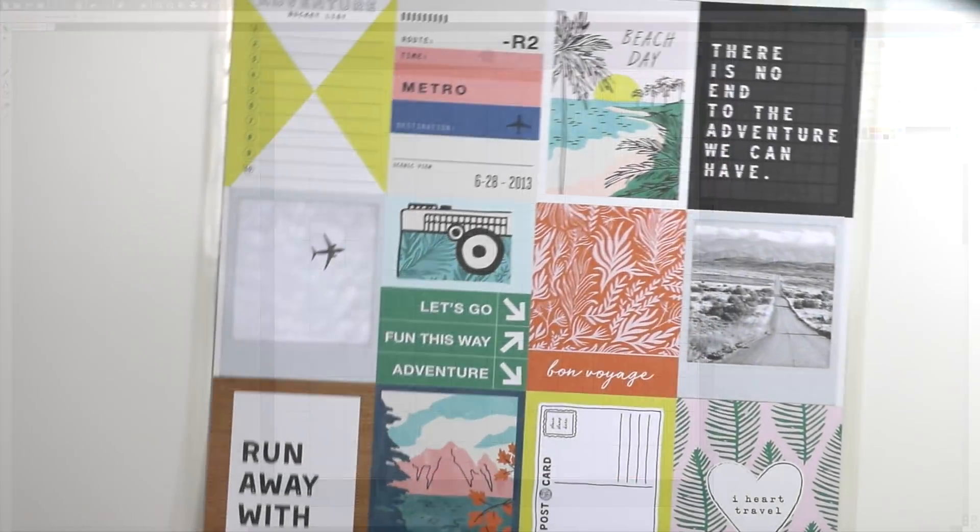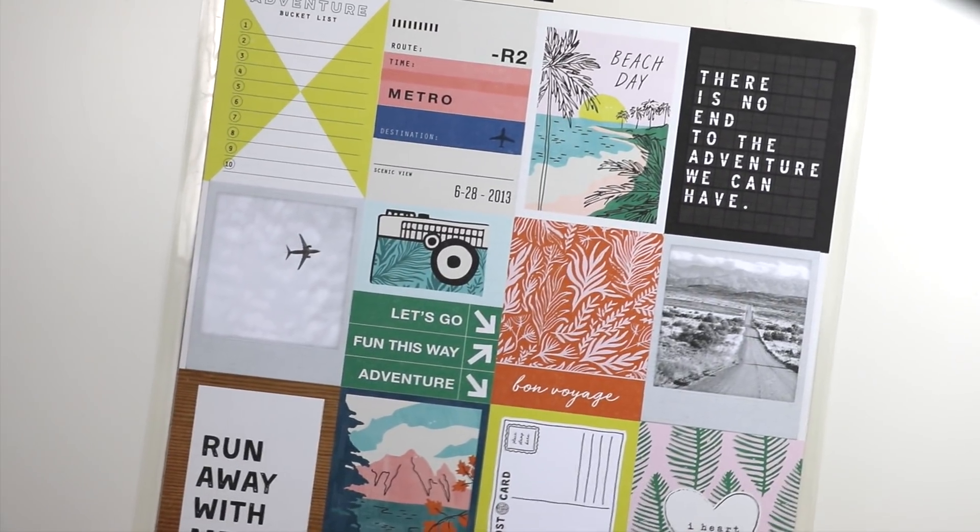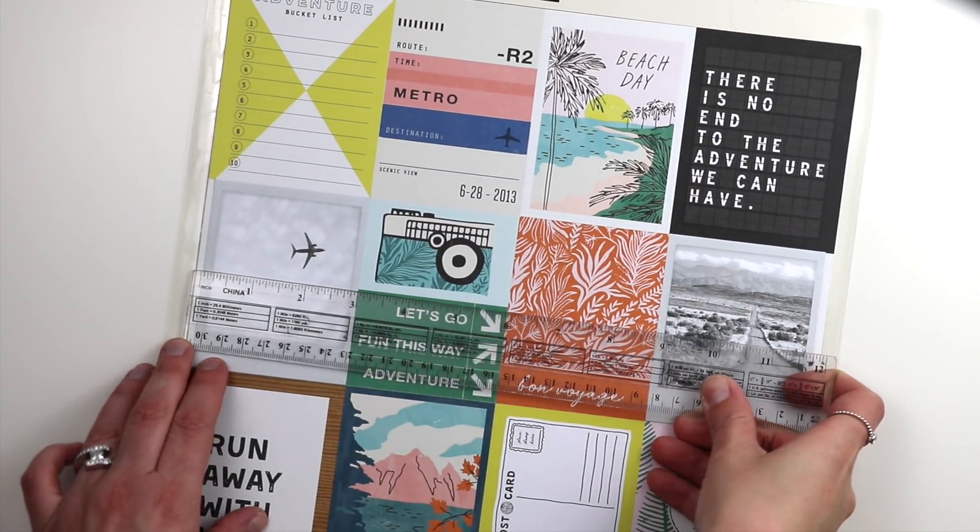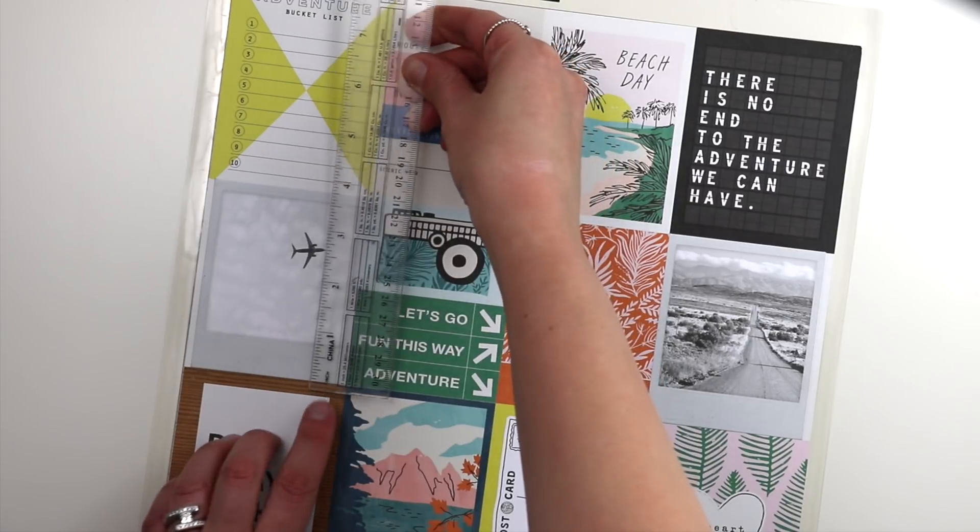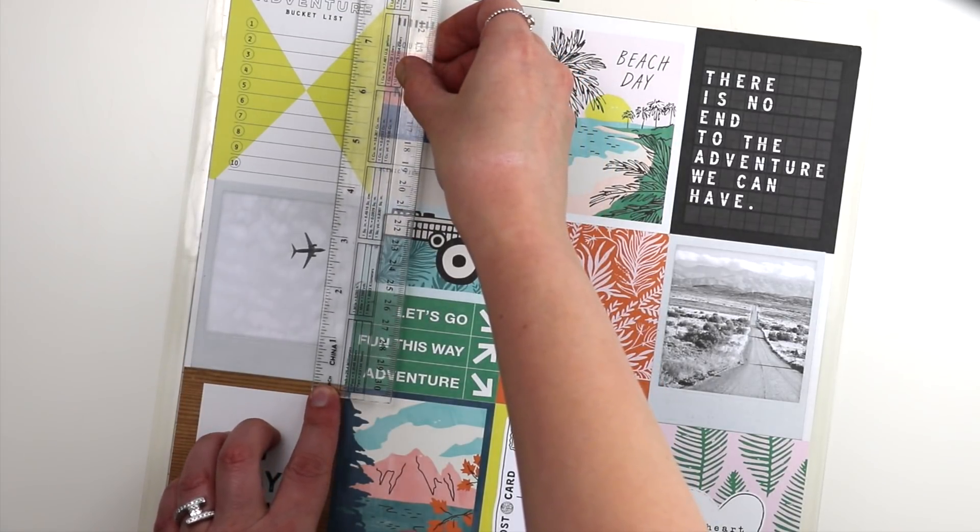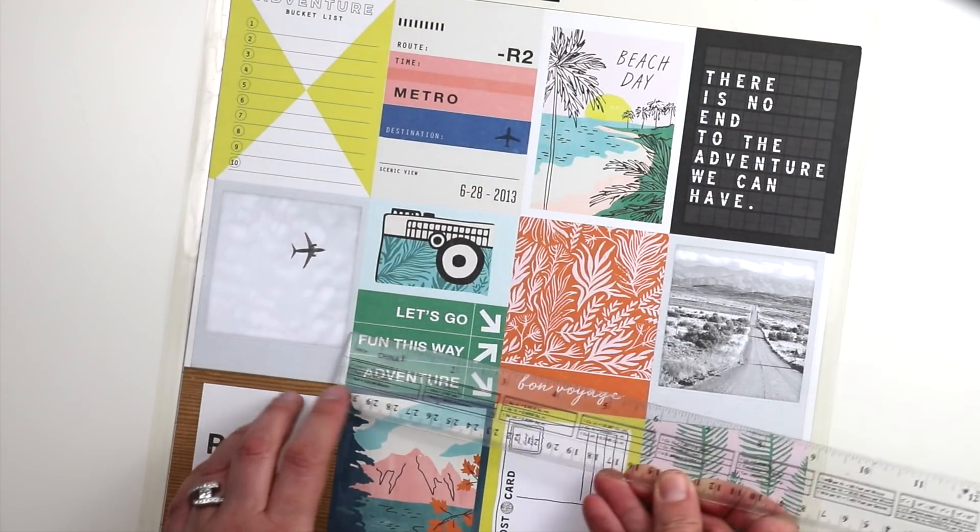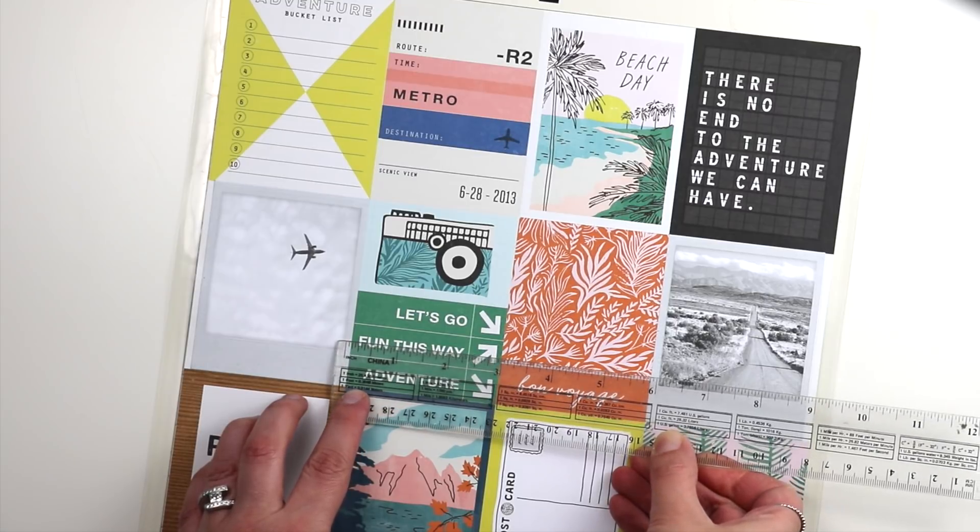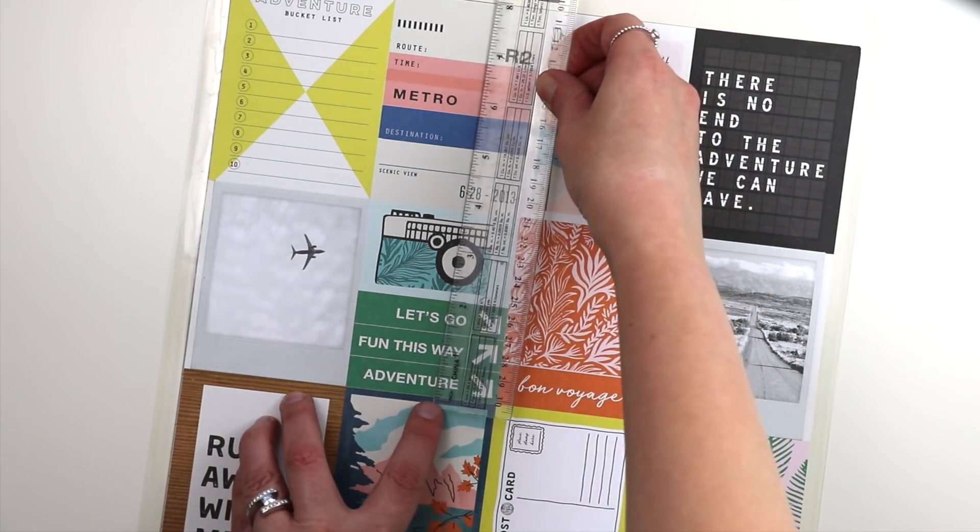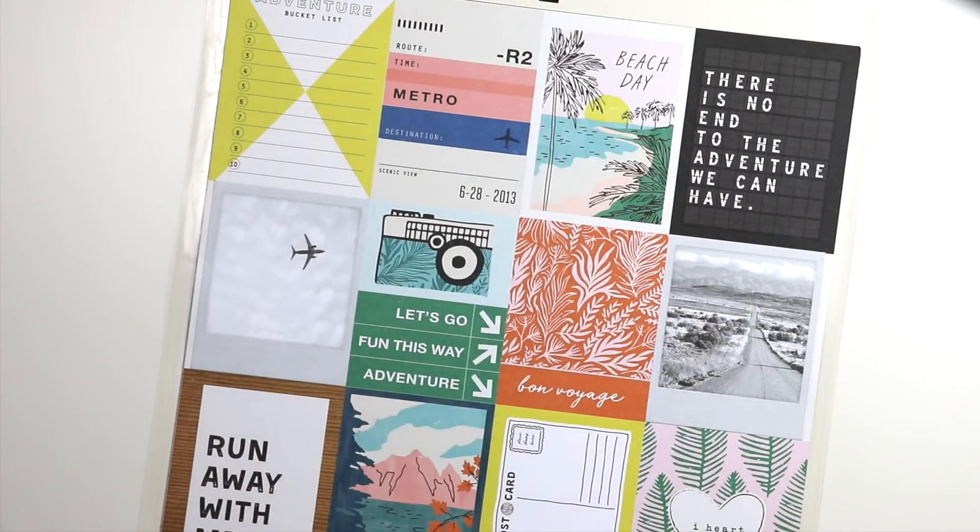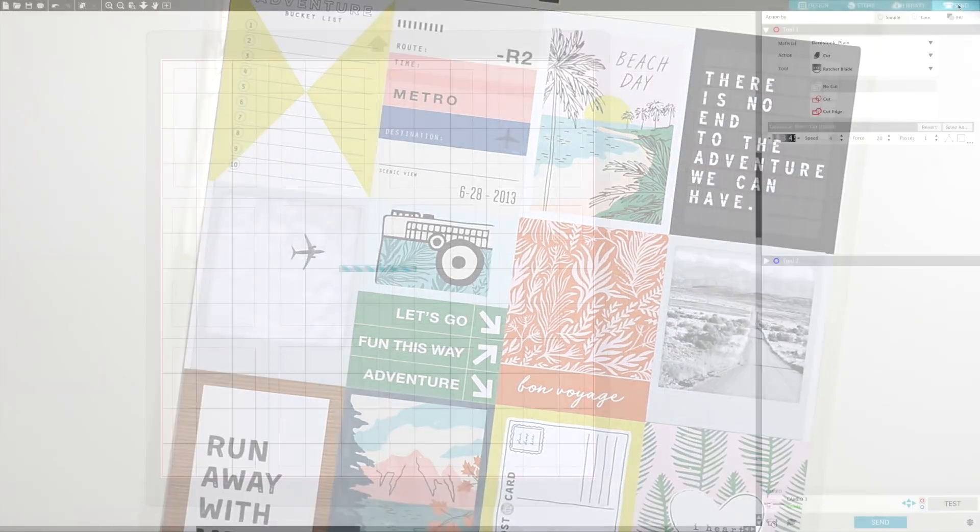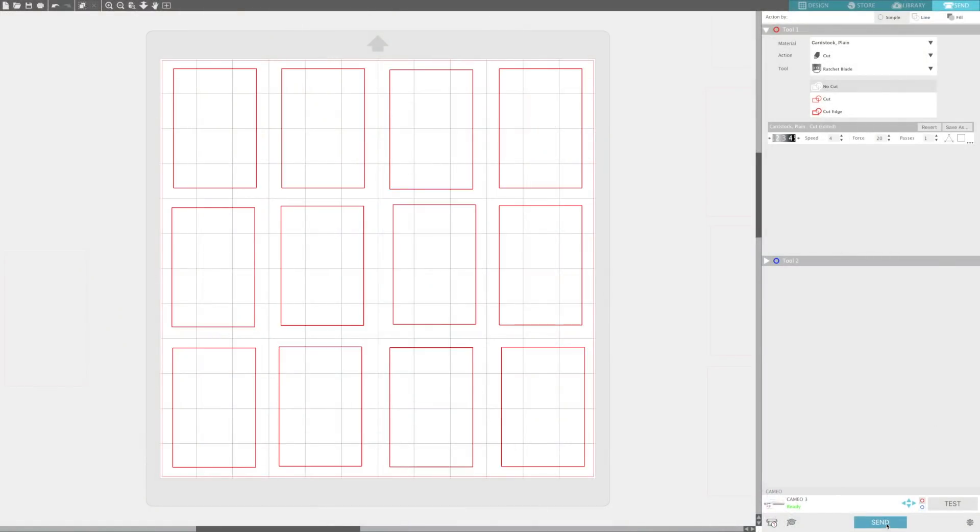Here is the patterned paper from the Crate Paper Here and There collection. I'll show you with my ruler how each section is about three inches by four inches. So this is perfect and I'm going to go ahead and cut all these layering papers from that patterned paper.